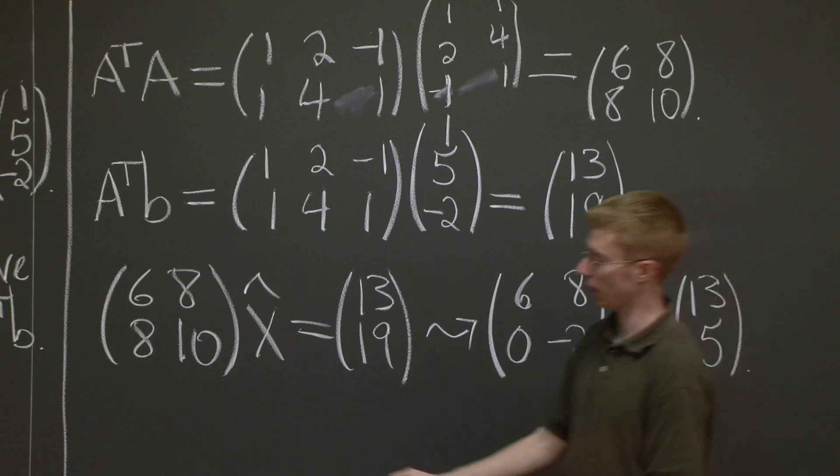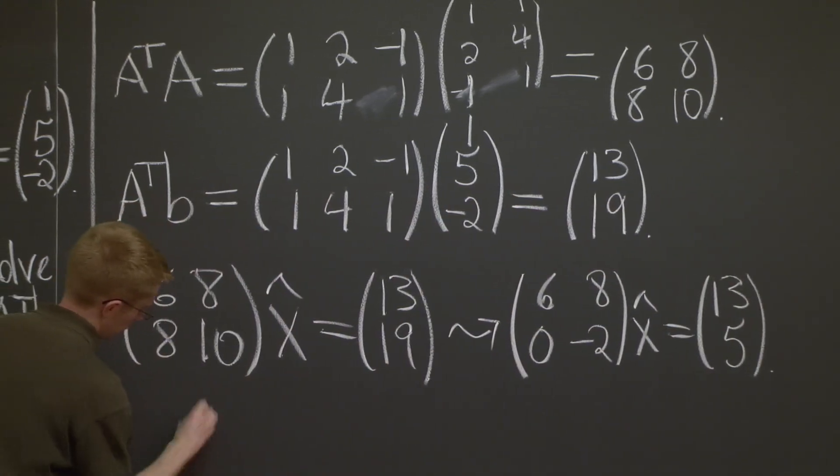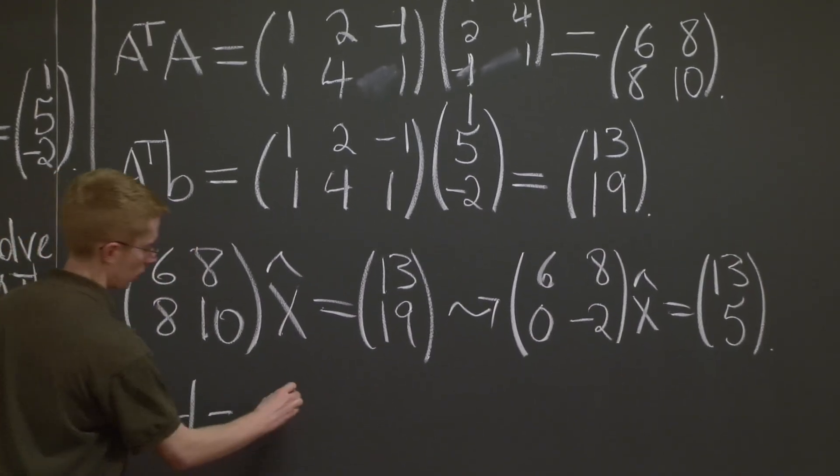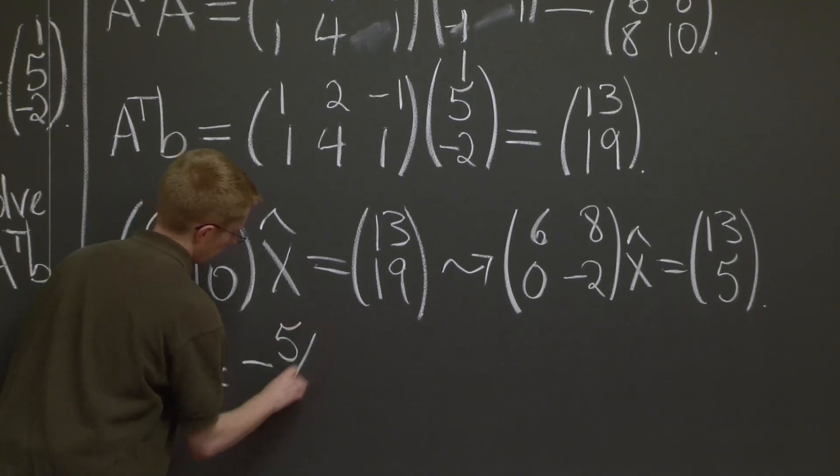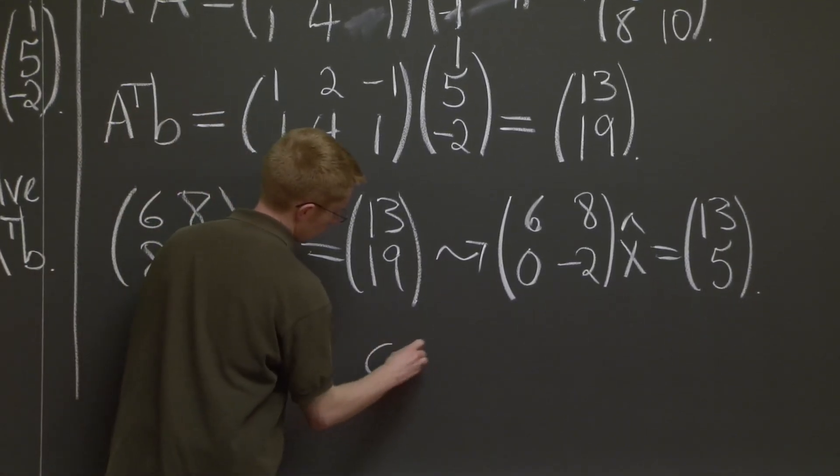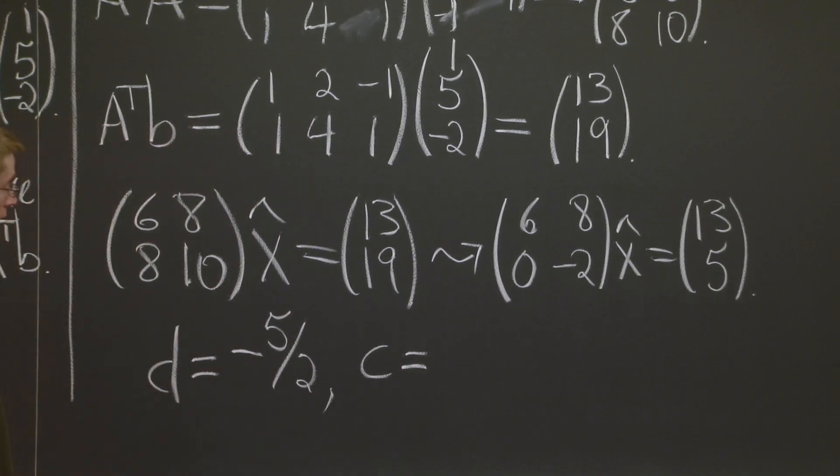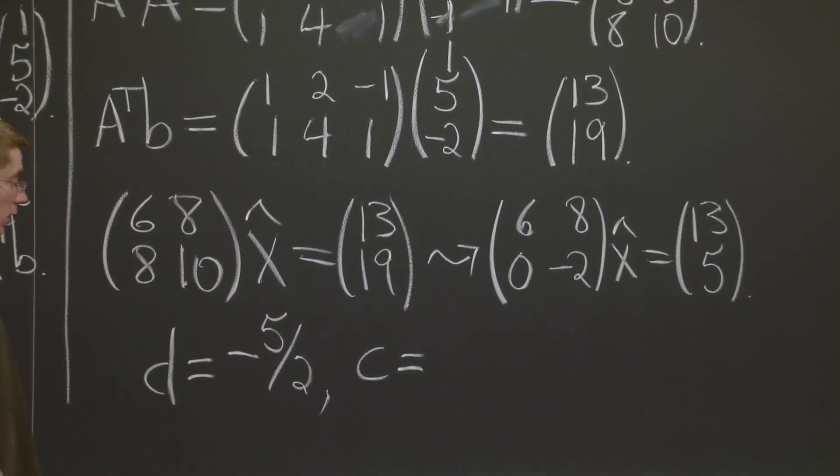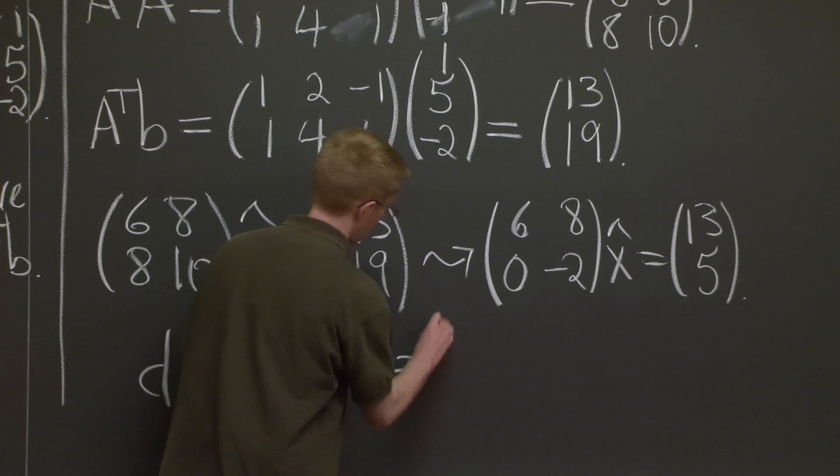You similarly change the b vector. And we back solve to get d is -5/2 and c equals, let's plug that in. And then c, I think you're going to get 11/2.